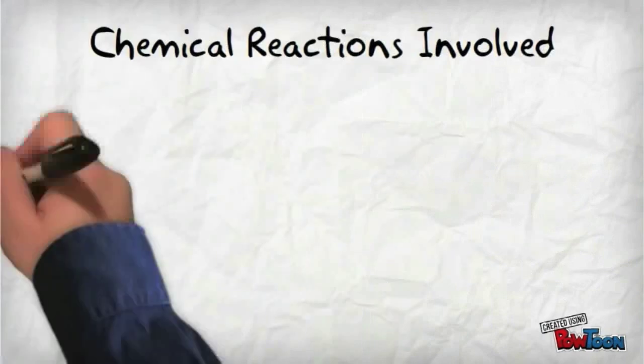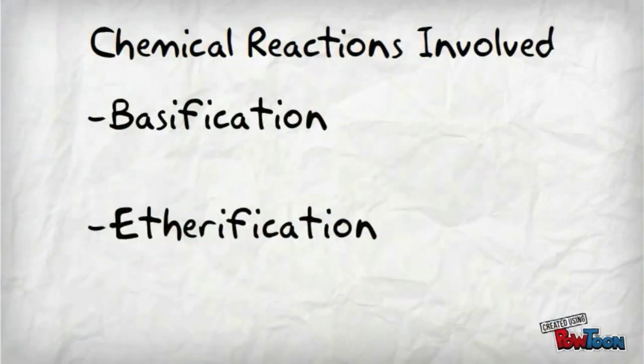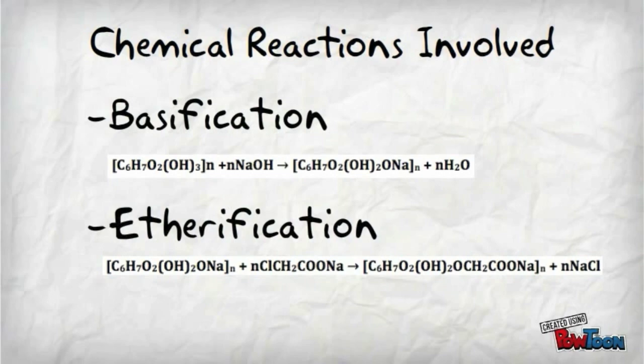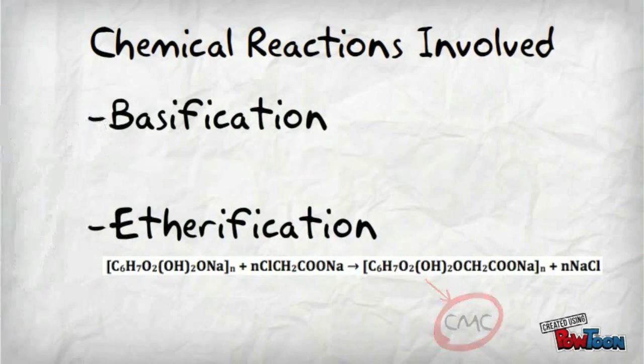The two major steps are basification and etherification. In the basification step, cellulose is suspended in an alkali to break the hydrogen bonding between cellulose chains. And in etherification, the cellulose is reacted with sodium chloroacetate to yield CMC.